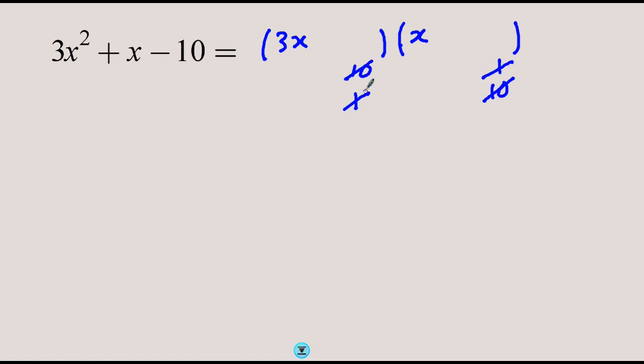The other factors of 10 are 5 and 2. Let me try 2 and 5: 5 times 3x is 15x, and 2x—is there a way of getting x from those two? No. There's only one option left, which is 2 here and 5 here. How can I get x from 6x and 5x? The only way is if the positive is here and the negative is here, giving 6x - 5x.